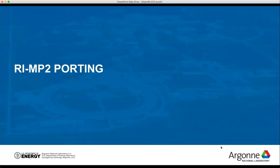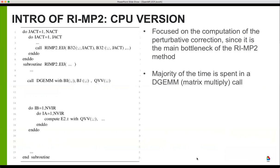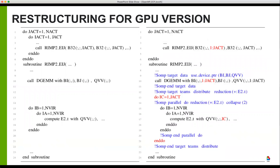Moving on to the RIMP2 code: we focus on the computation of the perturbative correction, since this is the main bottleneck of the RIMP2 method. In the original CPU code, we call DGEMM and then do some computation with the results. Even on the CPU, the majority of time is spent in calls to this matrix multiplier routine DGEMM, a standard in math libraries like BLAS. To port to GPUs, the strategy was to merge sections of arrays so that the inputs to the DGEMM call are larger, resulting in higher arithmetic intensity per DGEMM call and less overhead from kernel launches from CPU to GPU.